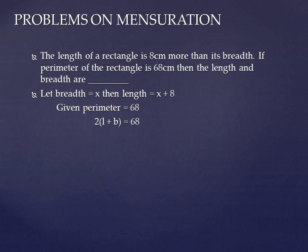The formula is 2 of (l plus b). Given its value is 68, so 2 of (l plus b) is equal to 68. Now transfer the 2 to the other side — multiply becomes divide. Then 68 by 2. Remaining on the LHS is l plus b, and on the RHS, 68 by 2 equals 34.